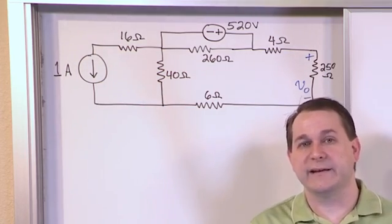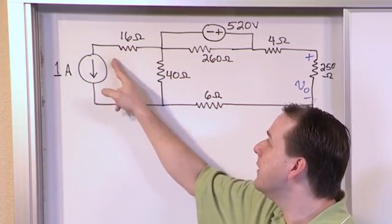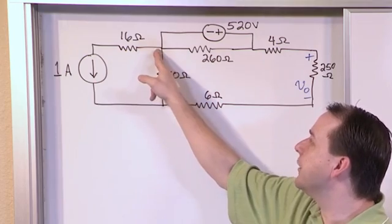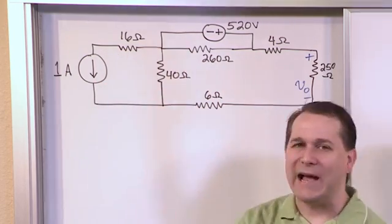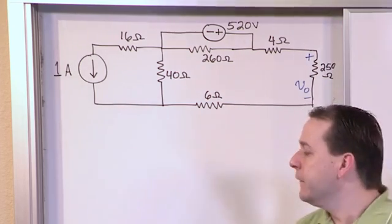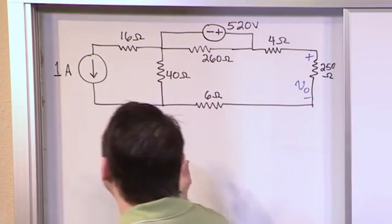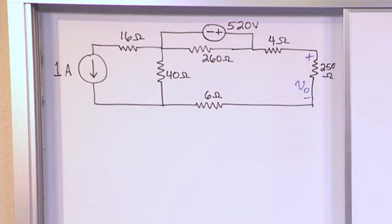It basically just pretends like it's not there. The reason it doesn't matter is because this current is flowing through this resistor all the way up to the intersection here. So since it's flowing through it, then the actual source transformation theorem works just fine. So what we're going to do is just basically pretend that the 16 ohm resistor isn't even there.